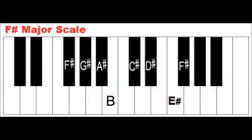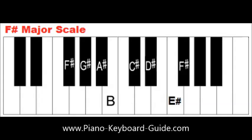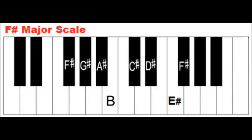Primary chords in a major key are based on the 1st, 4th, and 5th notes of the major scale. The notes of the F-sharp major scale are F-sharp, G-sharp, A-sharp, B, C-sharp, D-sharp, and E-sharp.